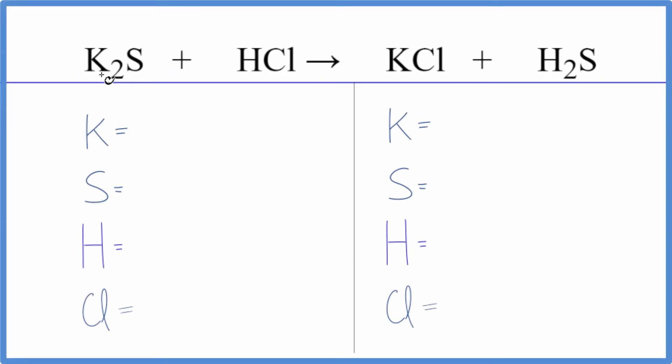In this video, we'll balance the equation for K2S plus HCl. This is potassium sulfide plus hydrochloric acid.